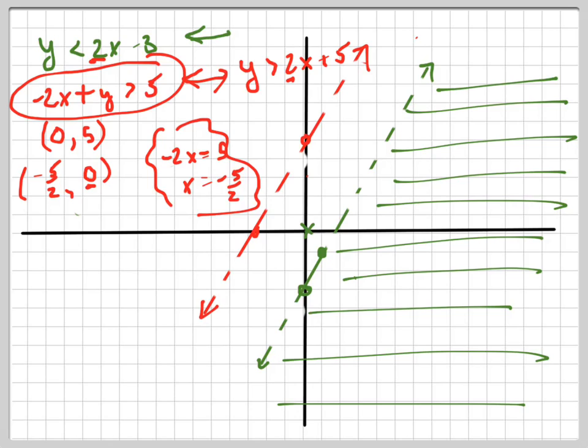So now let's test 0, 0 for the red graph. Is 0 plus 0 greater than 5? Is that a true statement? 0 plus 0 is greater than 5? No, 0 plus 0 is not greater than 5, so it's not shaded that way. It's shaded the other direction.